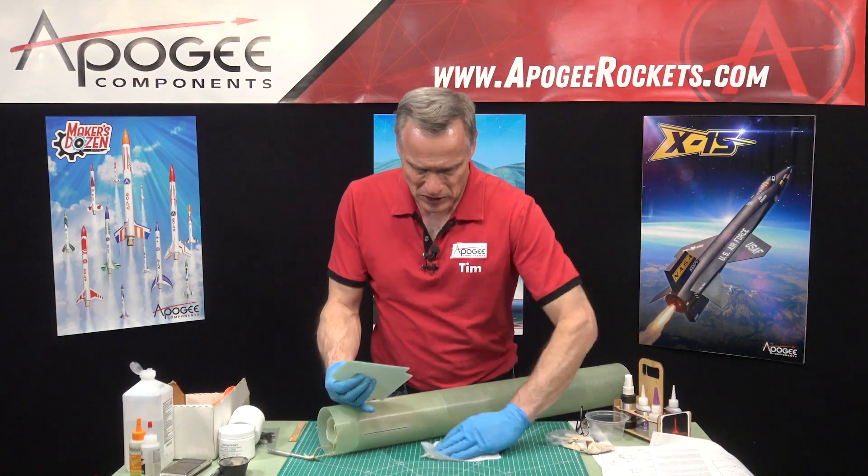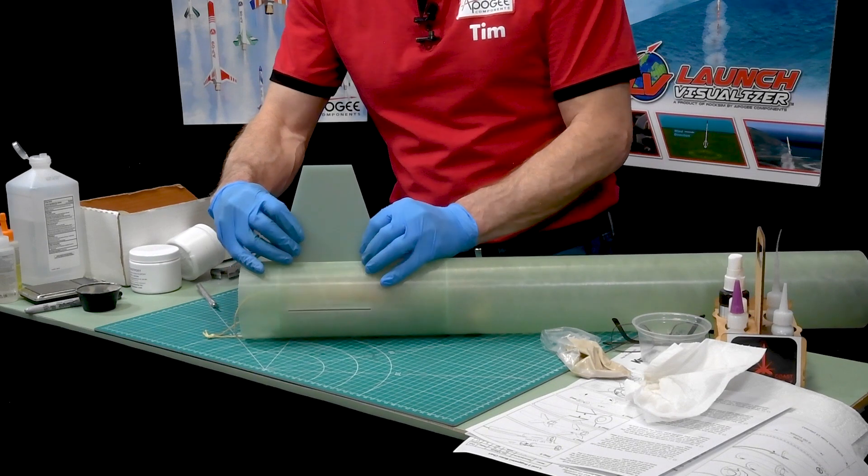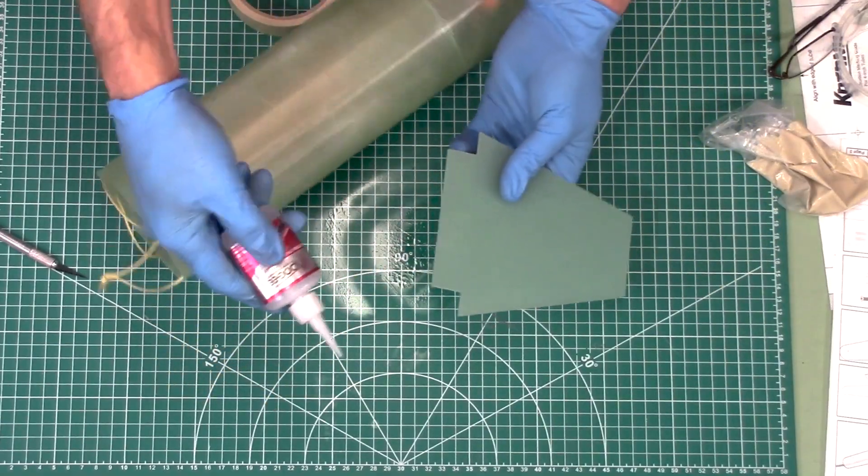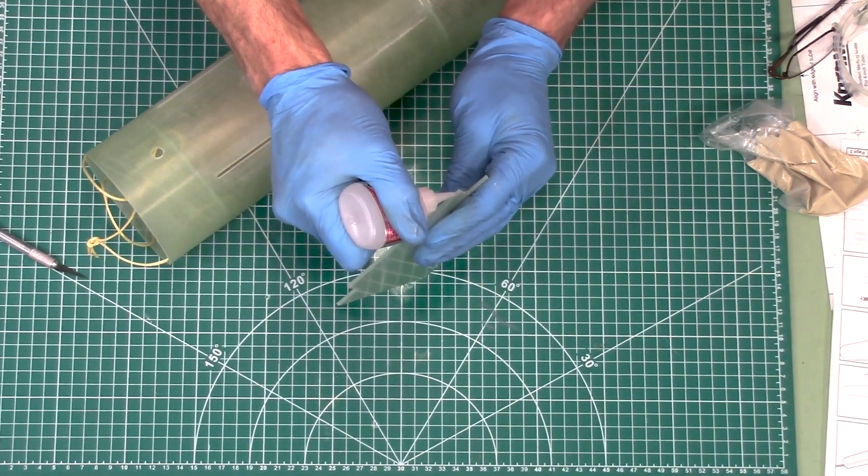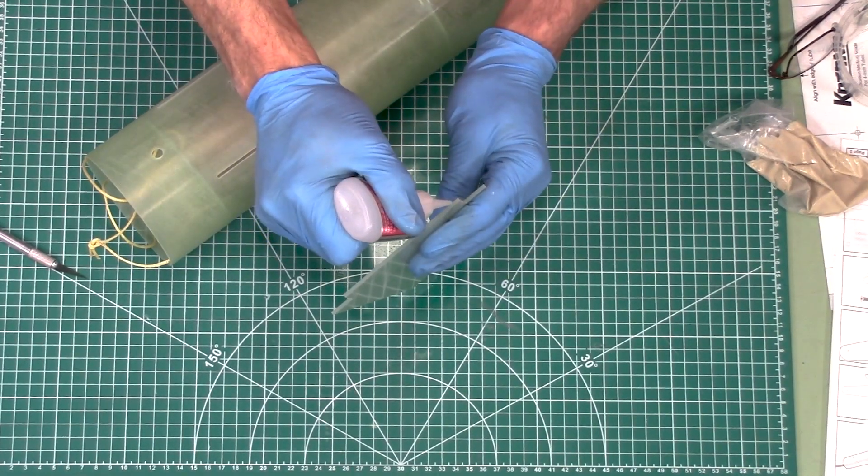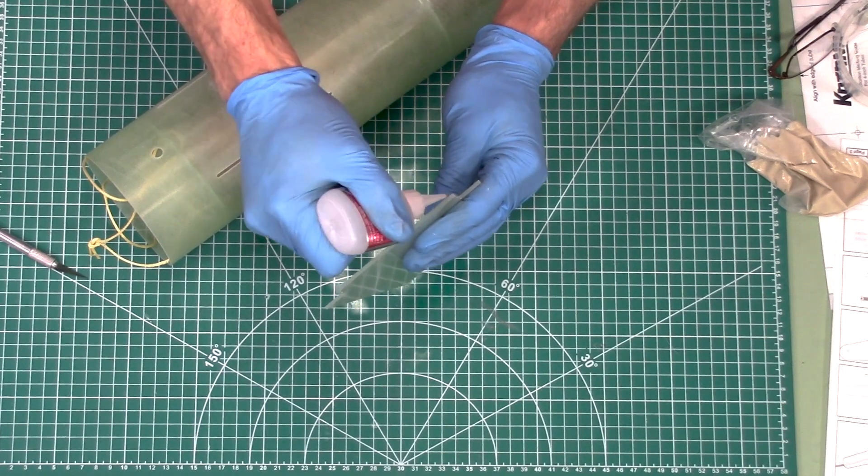Now I'm going to take my fins and I'm going to tack these in place with super glue. I'm going to use the super thick variety because I don't want it to move around on me too much. Of course it takes a little while to get down to the bottom. There we go.